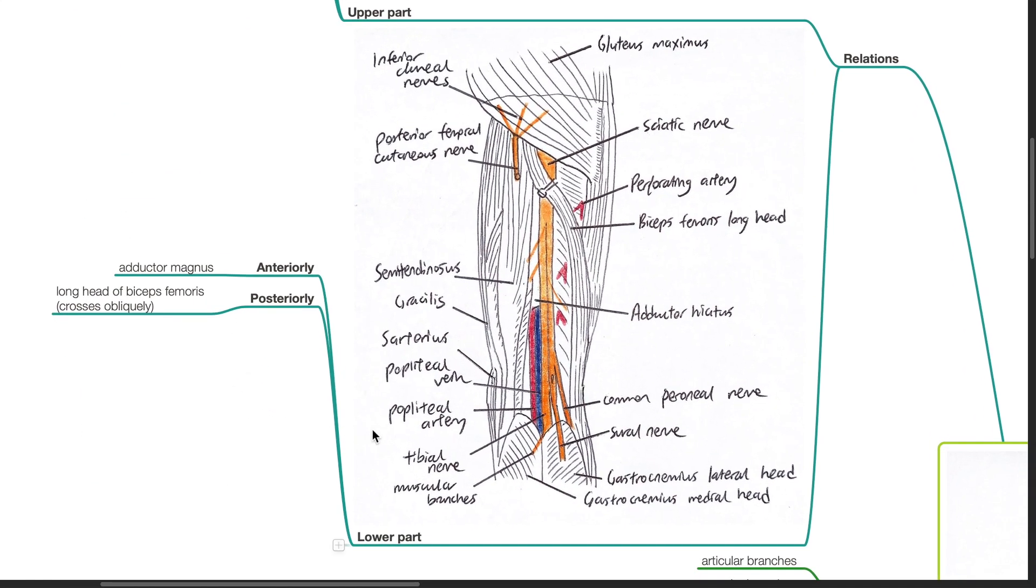Lower part. Anterior relations includes the adductor magnus. Posteriorly, the long head of the biceps femoris which crosses obliquely.